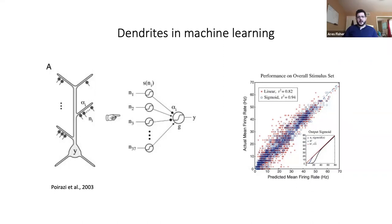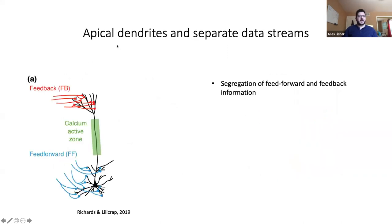In a previous paper, Poirazi and Mel found that having non-linear subunits — non-linear dendritic segments in their models — also led to much higher storage capacity. Inspired from this, a number of papers have recently looked at using these separate dendritic segments to leverage them in their models.